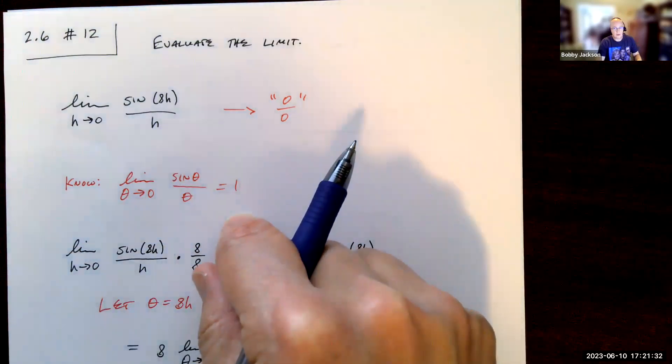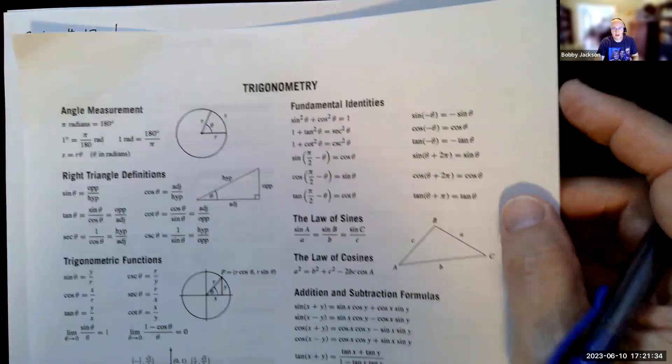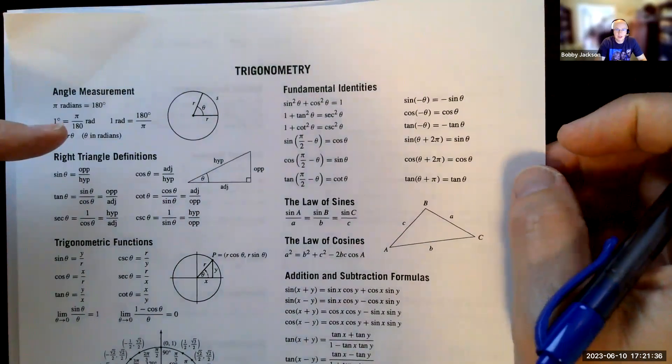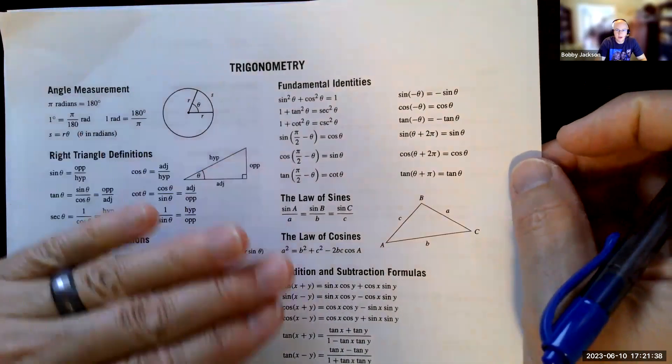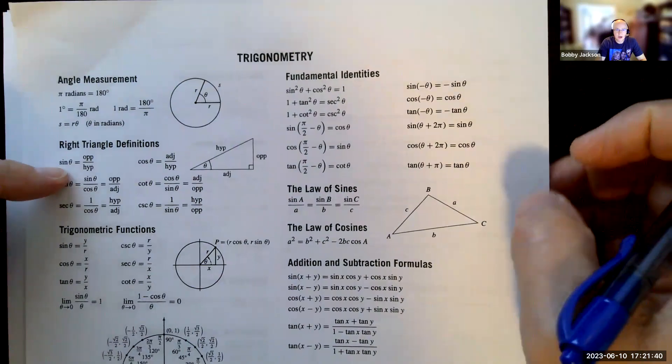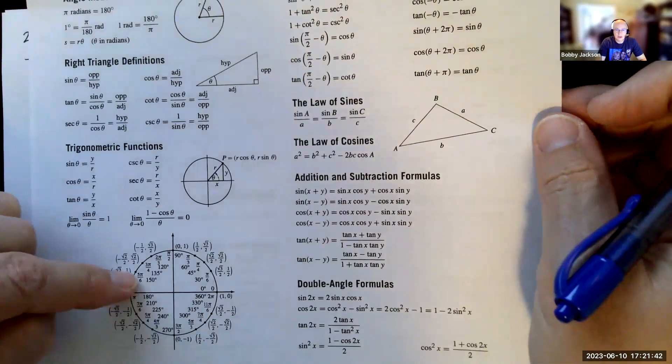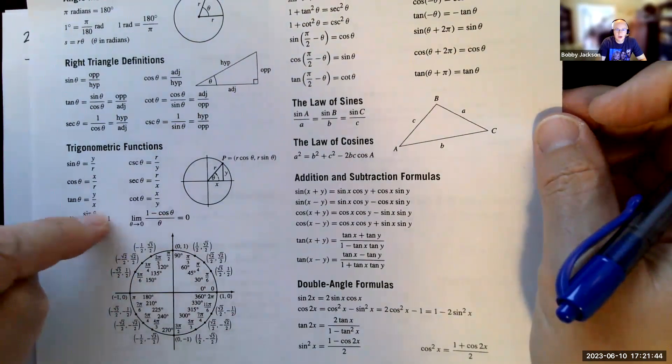There's actually two important limits. These are actually given on the trigonometry help sheet that I give you on the test, where you have the fundamental identities, right triangle definitions, unit circle, and then you'll see those two limits right there.